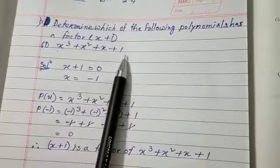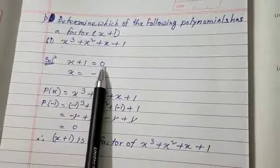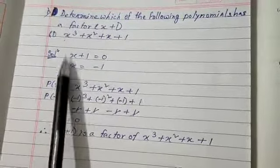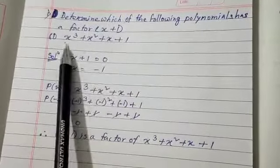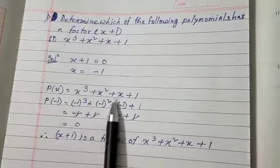The polynomial is x³ + x² + x + 1. Solution: Given x+1 as a potential factor, we set x+1 = 0, so x = -1. Let P(x) = x³ + x² + x + 1.